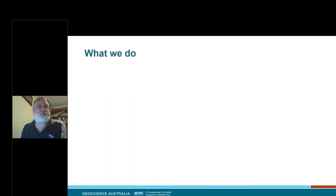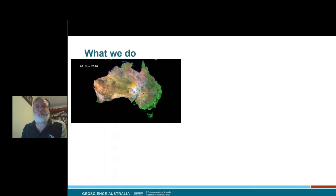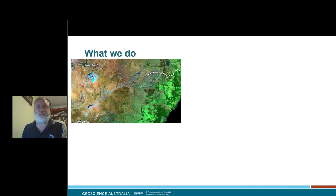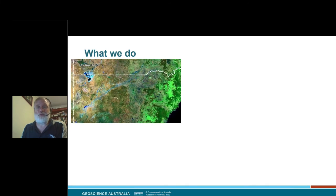In terms of Geoscience Australia itself, we are, as I said, 600 people. Our tagline is applying geoscience to Australia's most important challenges. Here's a sample of what we get up to. Mapping of floods using satellite imagery, courtesy of the Digital Earth Australia. Note the change in greenness in the Murray-Darling River as it flooded a couple of years ago.